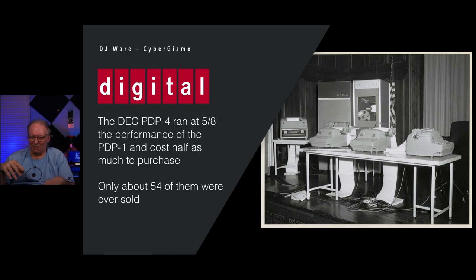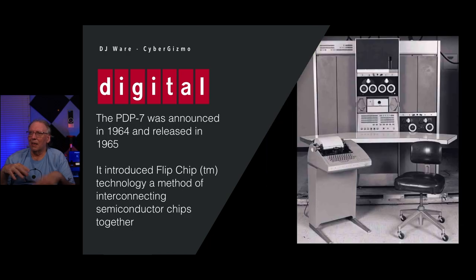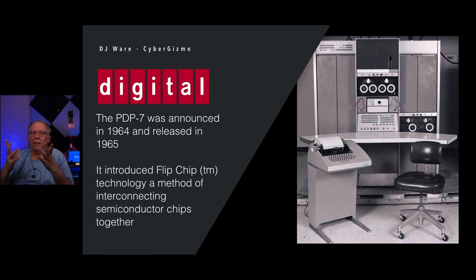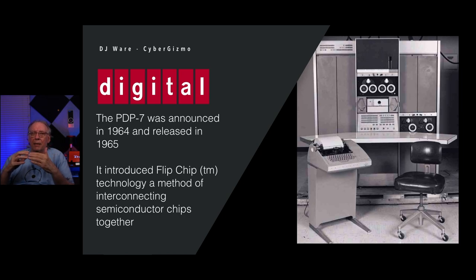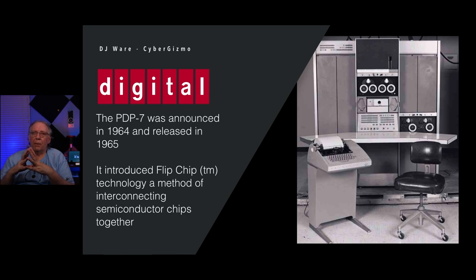The market basically said: I'm going to buy a slower machine? Don't think so. So the PDP-7 was announced in 1964 and released the following year in 1965. Its claim to fame was Flipchip — a trademark technology co-developed by DEC and another company. That was a method of interconnecting semiconductor chips together so they would operate as one unit, which was necessary to integrate multiple ICs into a computer.